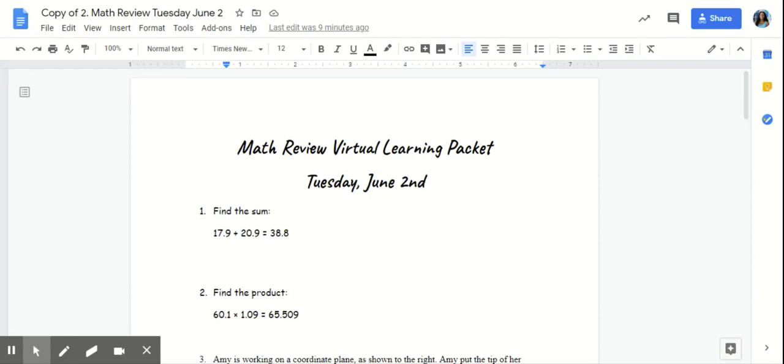Number two, you're going to find the product of 60 and 1 tenths times 1 and 9 thousandths. If you multiplied it correctly and you stacked your numbers correctly on top of one another, the correct answer is 65 and 509 thousandths.